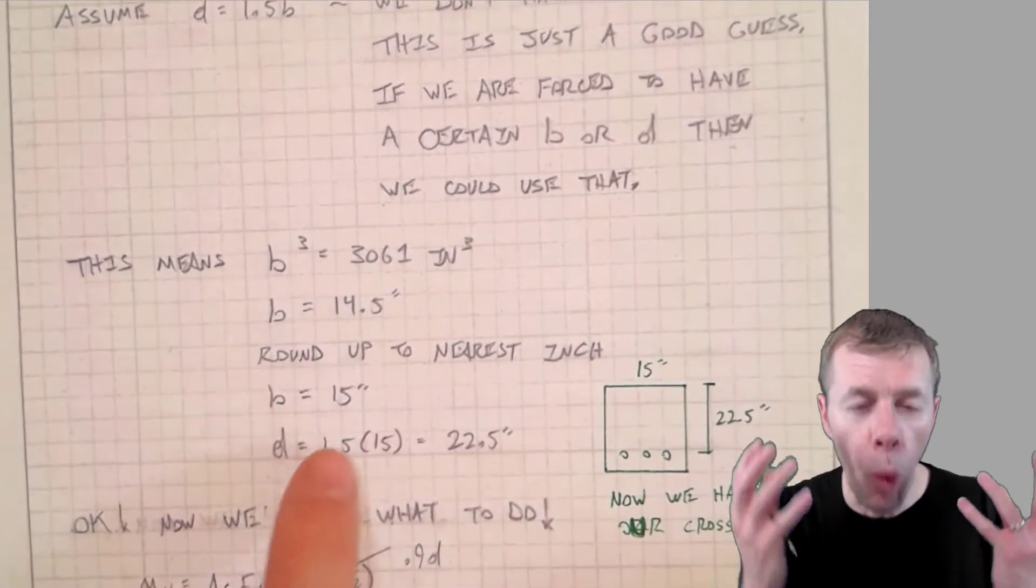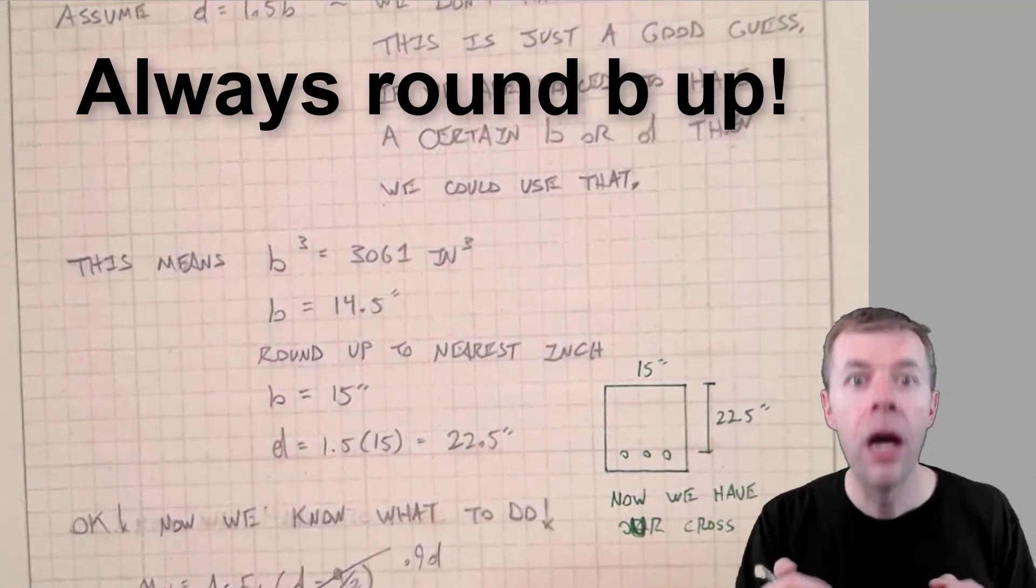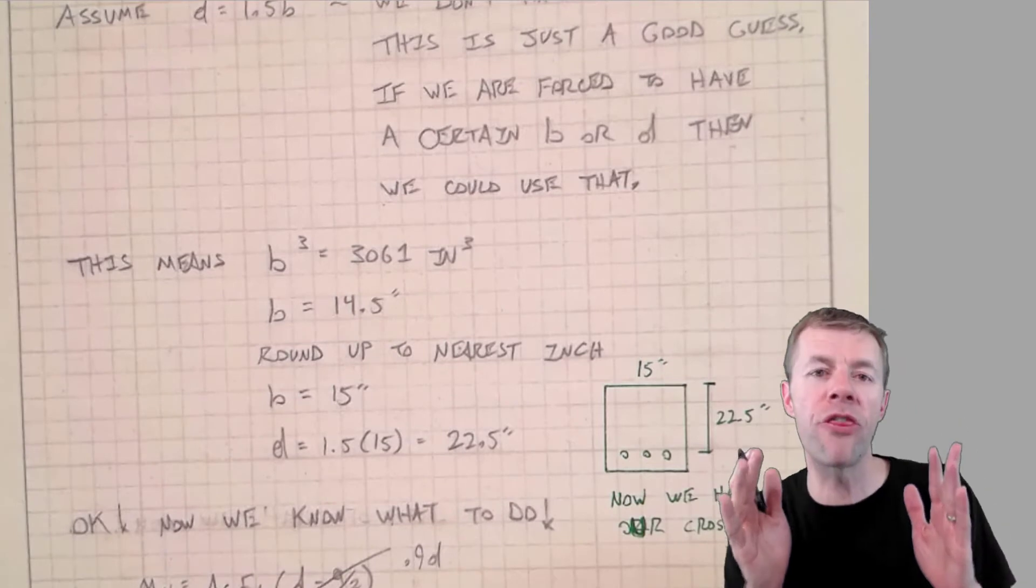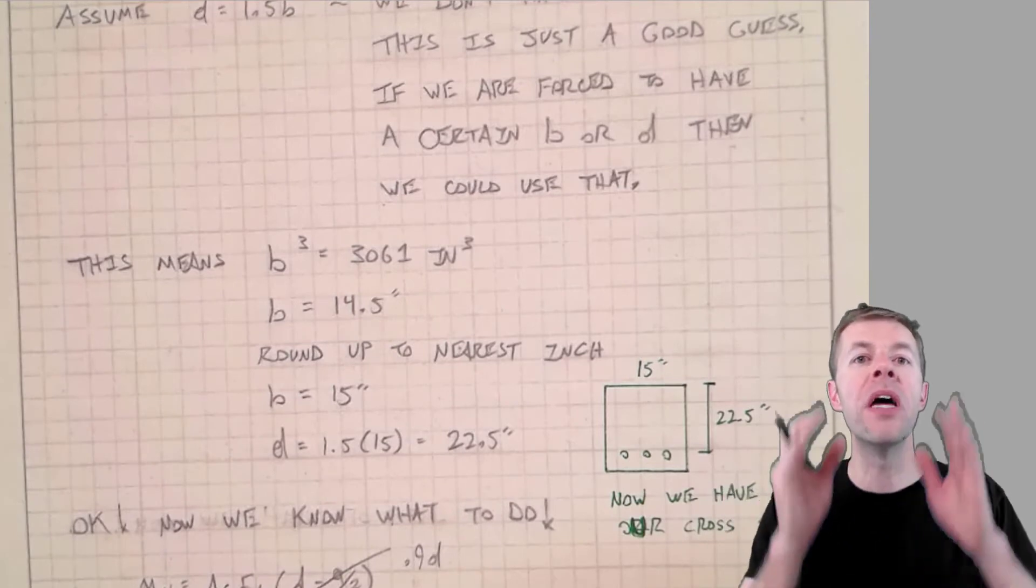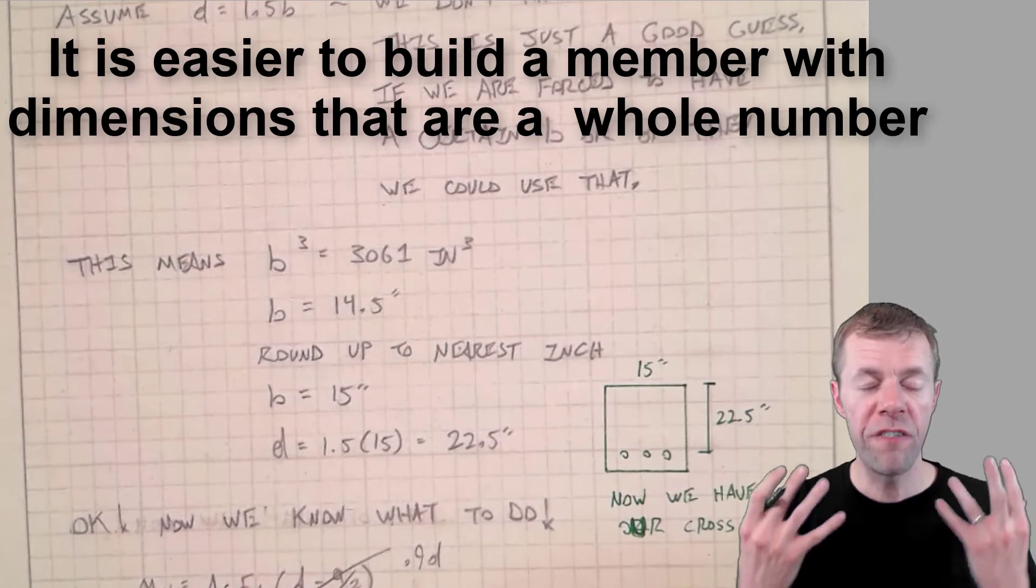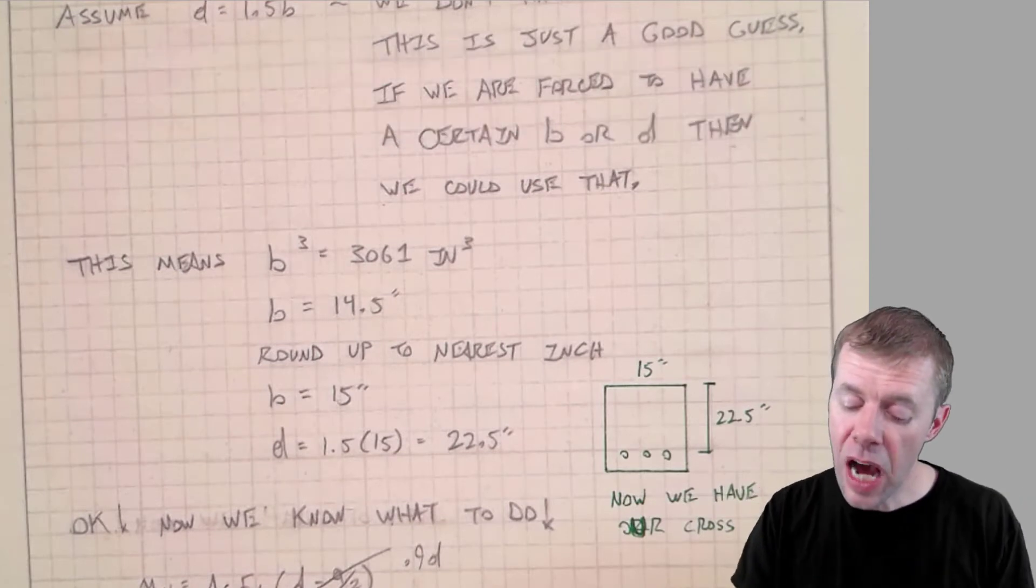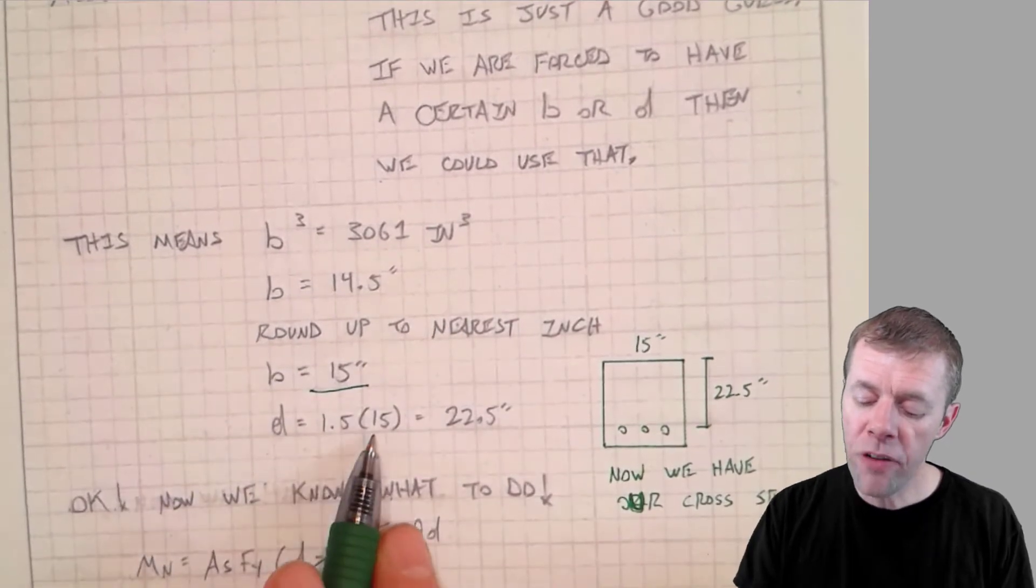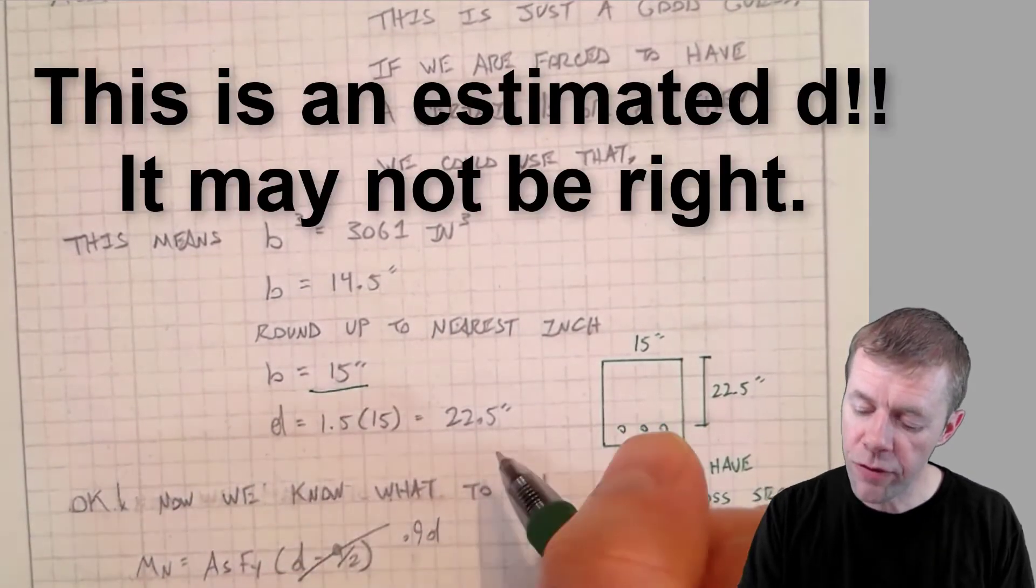And I'm going to round this up. Why? Because I don't want to build things at a half inch or a quarter inch or a third of an inch increment. I want to build them in nice round numbers. 15 inches is a nice round number. That makes my D 1.5 times 15, 22.5.